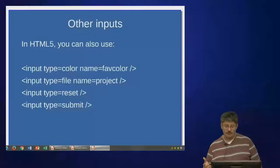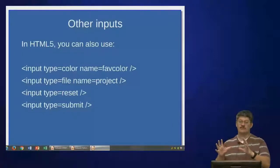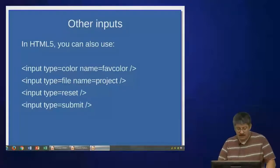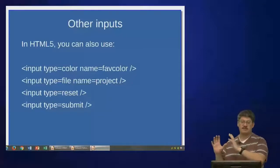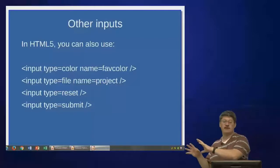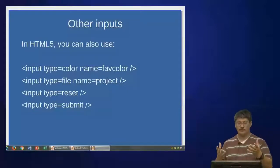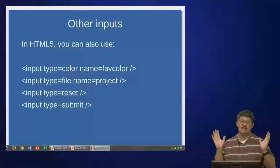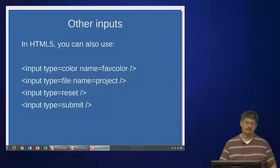HTML5 provides many other inputs. There's a color type that pulls up a color wheel and represents the selection as an RGB color code. There's a file type that gives a file name box with a browse button, allowing the user to navigate to a file and upload it on submit. There's a reset type that clears the form when clicked. And of course there's the submit button type to submit the form.